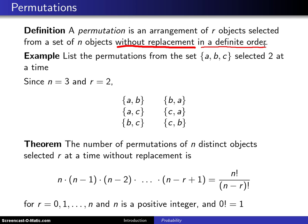And those are really the keys to the definition. If order is important, then you're looking at permutations. If order is not important, then you're looking at the next topic, which is combinations. Here's an example: list the permutations from the set {a, b, c} selected two at a time.